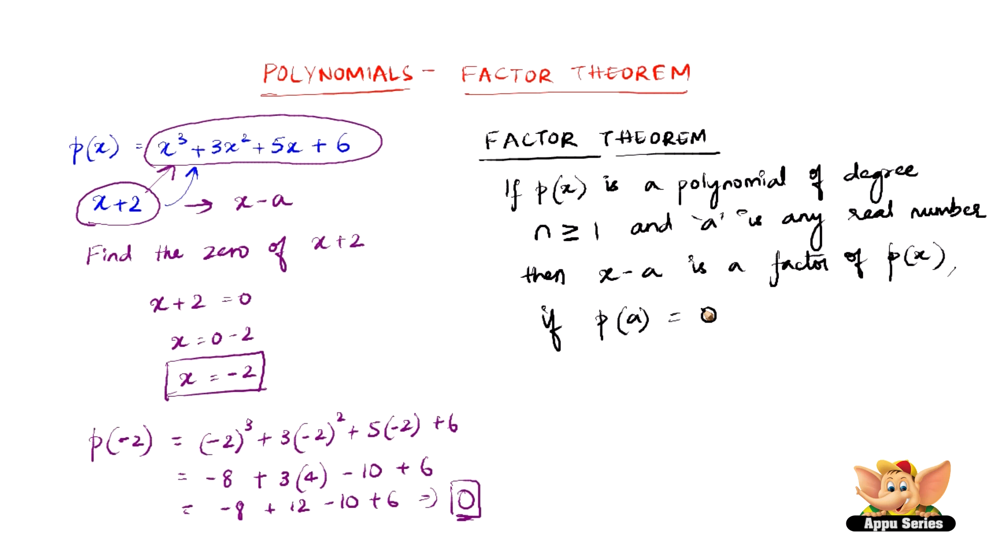I hope you can relate this note with the example that I've done here. p(x) is this and x - a is x + 2. So we've done the same thing here and we've got p(a) = 0, which says that x + 2 is indeed a factor of x³ + 3x² + 5x + 6.